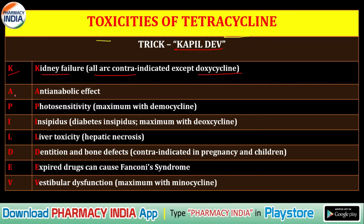A denotes anti-anabolic effect. P denotes photosensitivity, which is seen maximum with demeclocycline. I denotes insipidus — that is diabetes insipidus — which is seen maximum with demeclocycline.